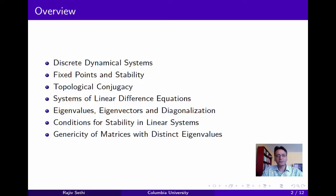For the rest of this segment, we'll focus on linear difference equations in Euclidean space, and we'll use the results from linear algebra that we developed in the last segment to identify conditions for the stability of fixed points in such systems. Our focus will be on linear systems that can be described by matrices having distinct eigenvalues, and we'll provide some justification for this at the end by arguing that the property of having distinct eigenvalues is generic within the set of matrices.